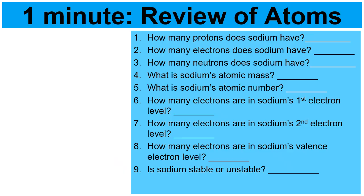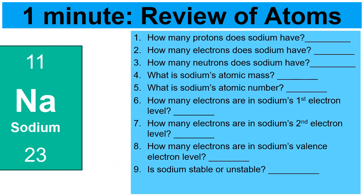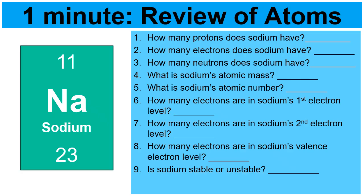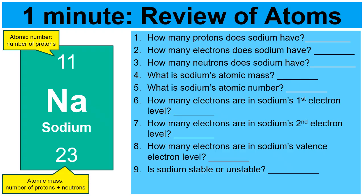First of all, here's a review of what you should know about atoms. Here's the periodic table square of sodium. Pause the video — I'm going to go over these nine answers. You might remember that the smaller of the two numbers, the 11 on top, is the atomic number — the number of protons. The bigger number, 23, is the atomic mass — the number of protons plus the number of neutrons.